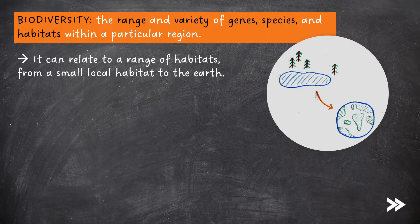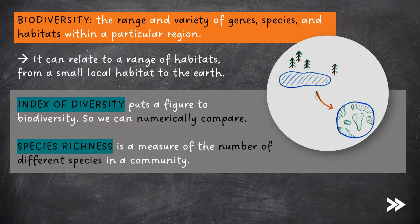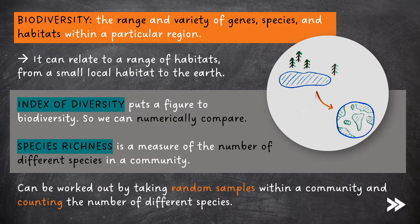Then we need to know a few key terms. The index of diversity puts a figure to biodiversity, allowing us to numerically compare biodiversity. Species richness is a measure of the number of different species in a community, and can be worked out by taking random samples within the community and then counting the number of different species.